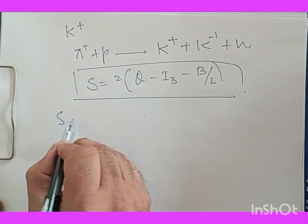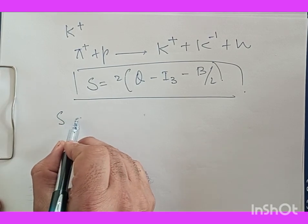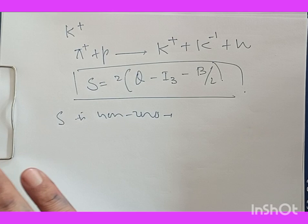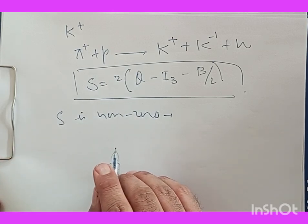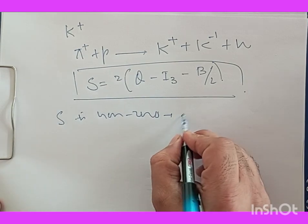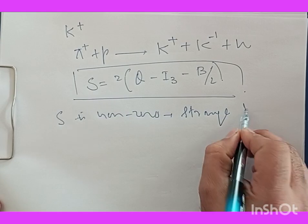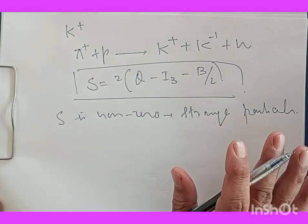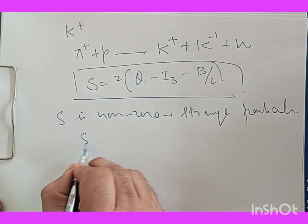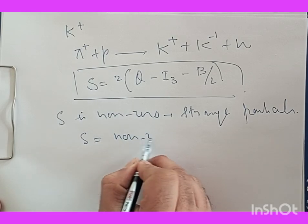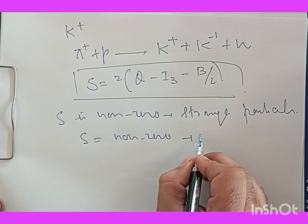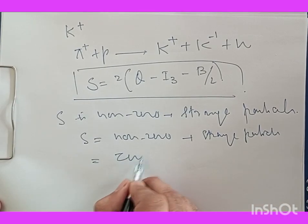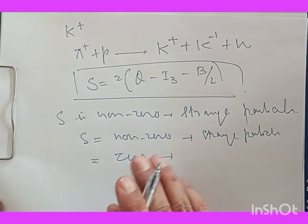This strangeness S is non-zero for strange particles and zero for all other particles that are not strange particles.